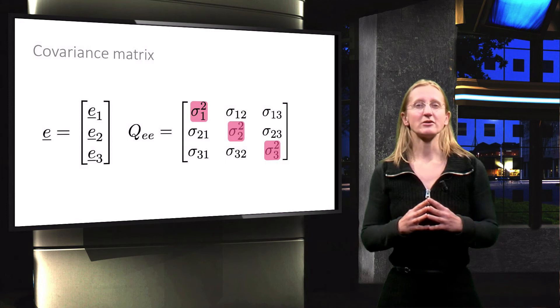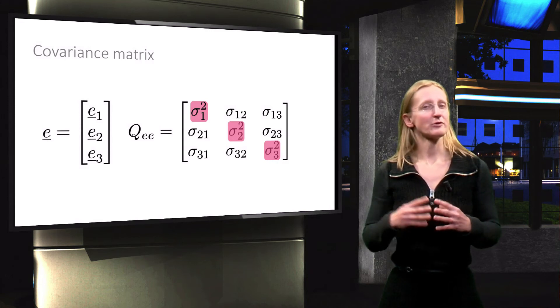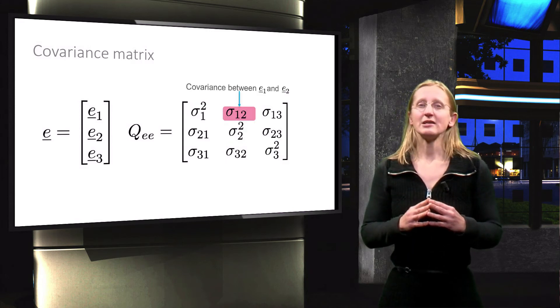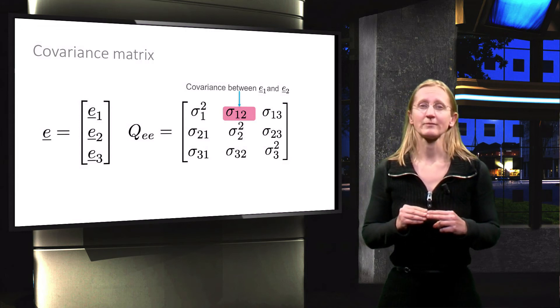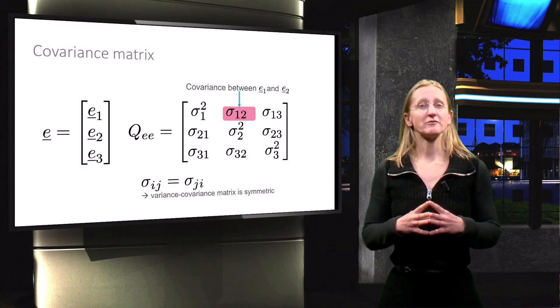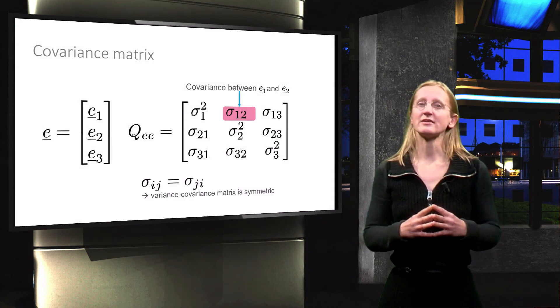The off-diagonal elements are the covariances. For example, this element is the covariance between the first and the second random error. An important property of covariance matrices is that they are symmetric.